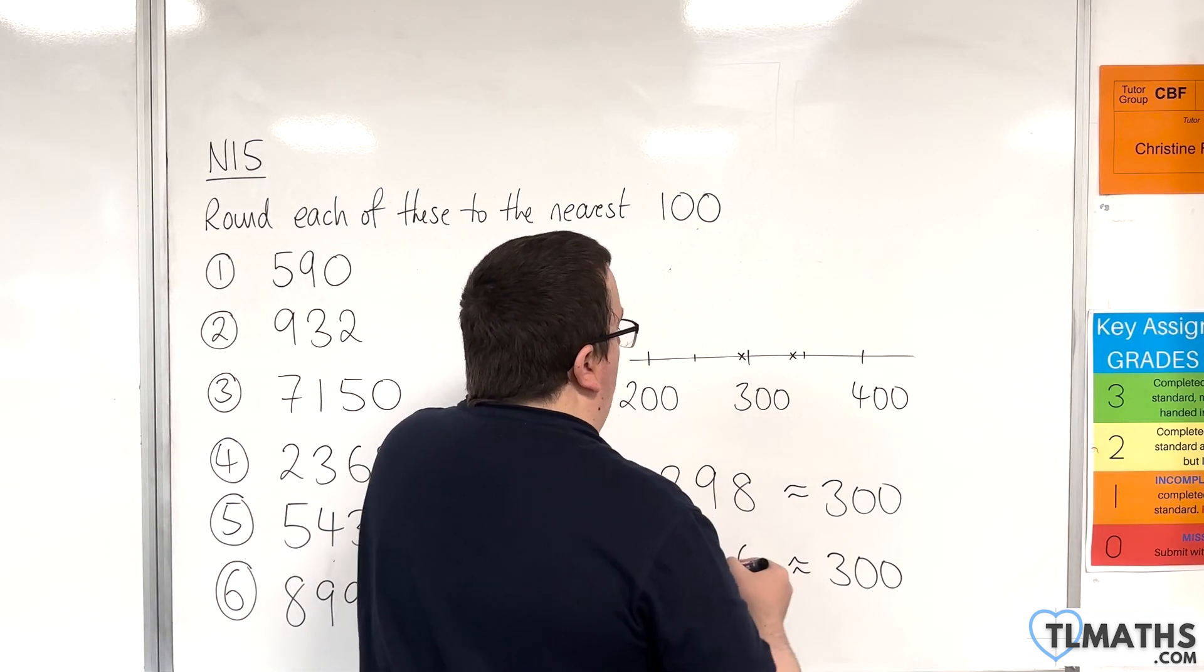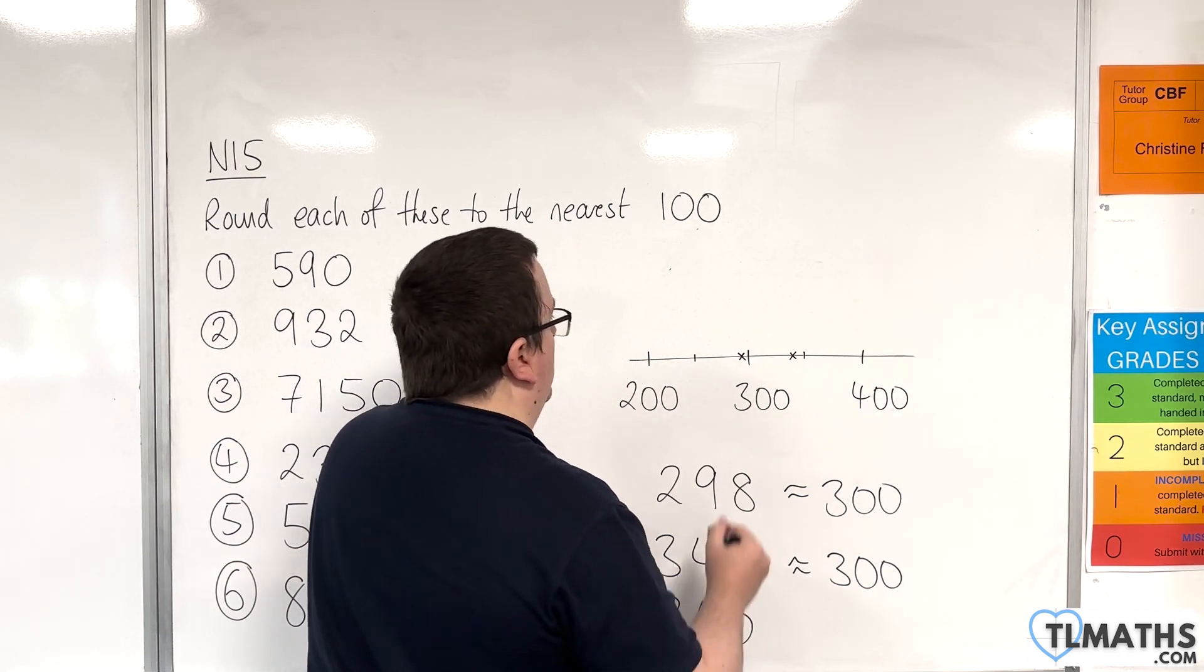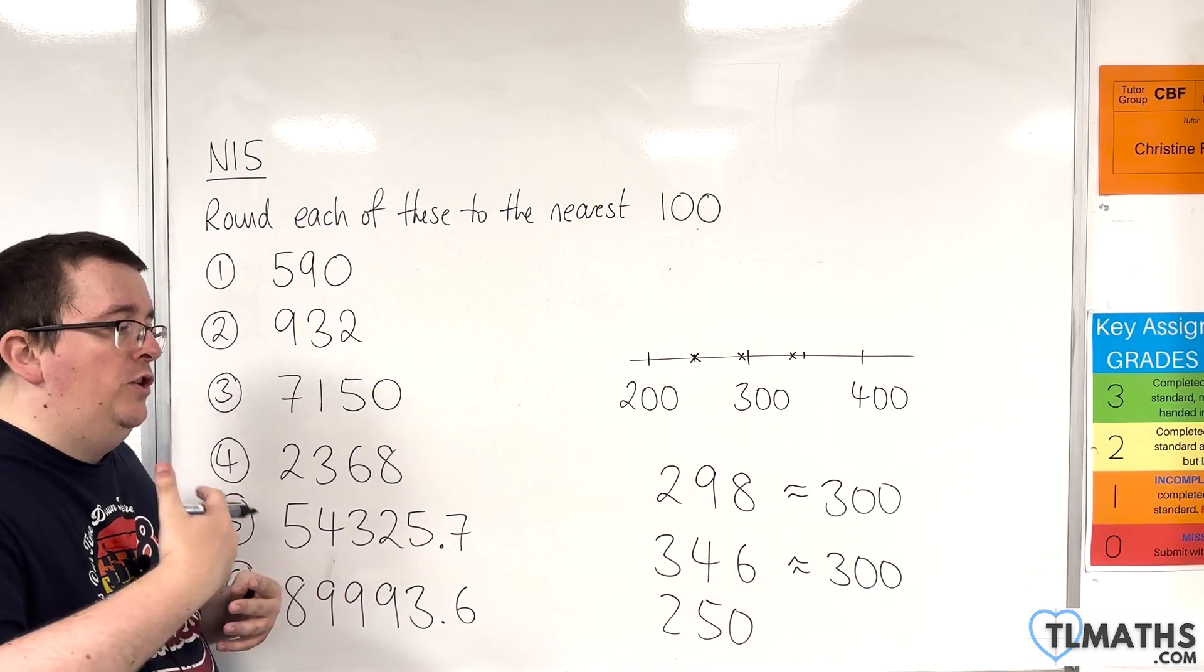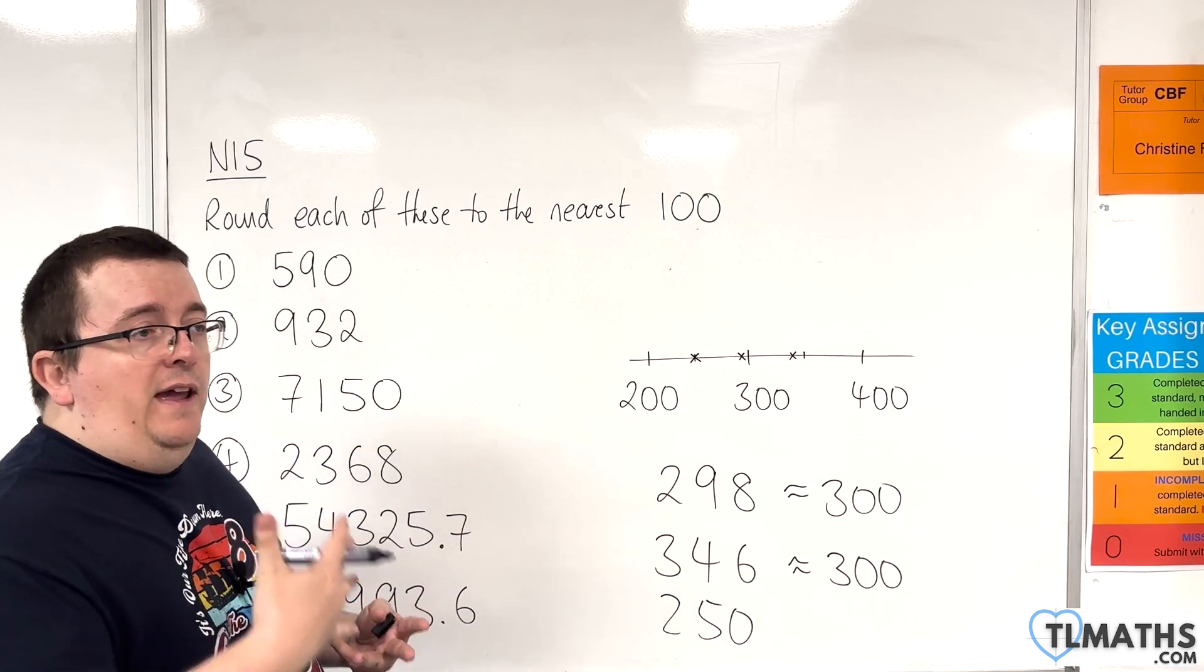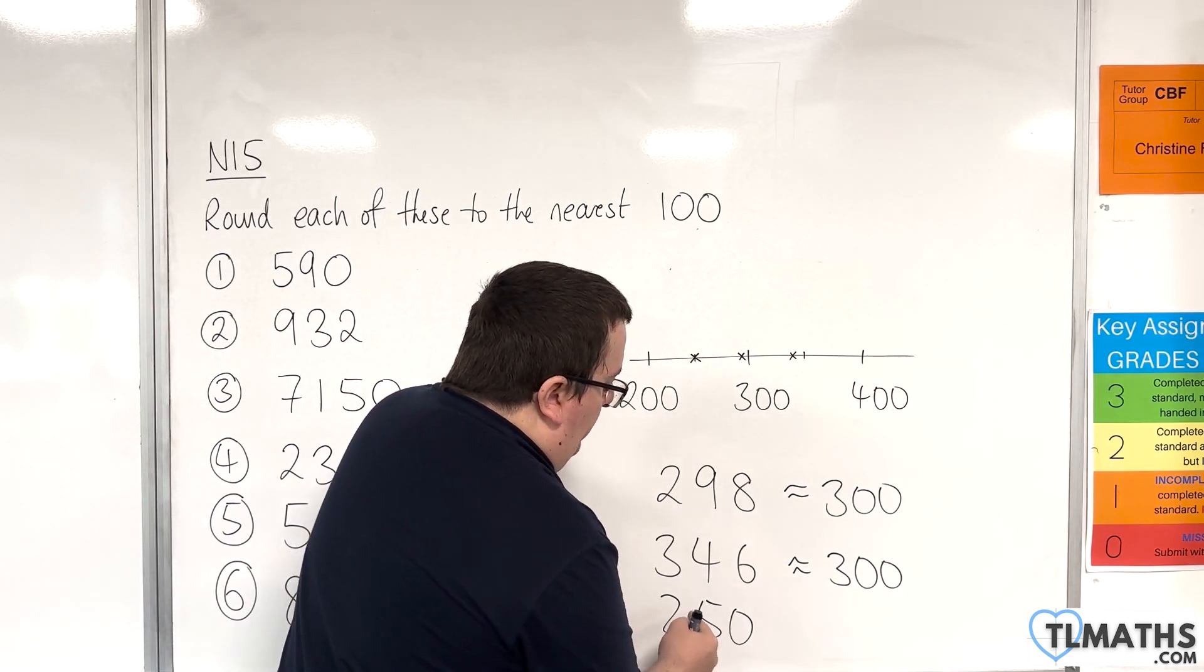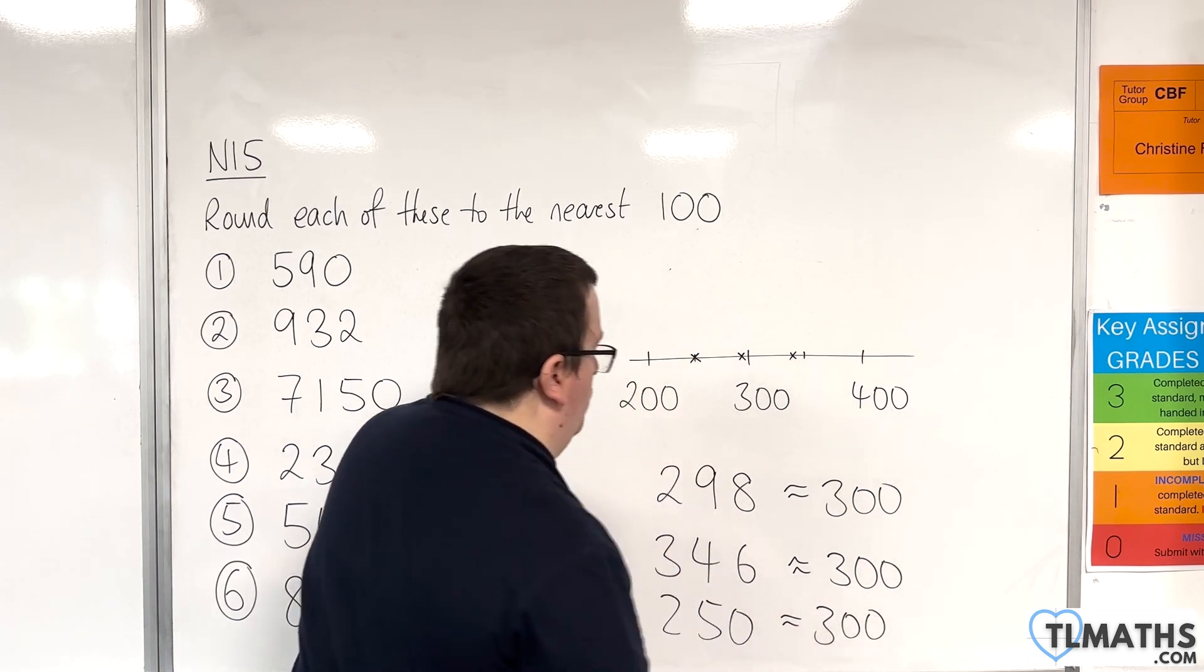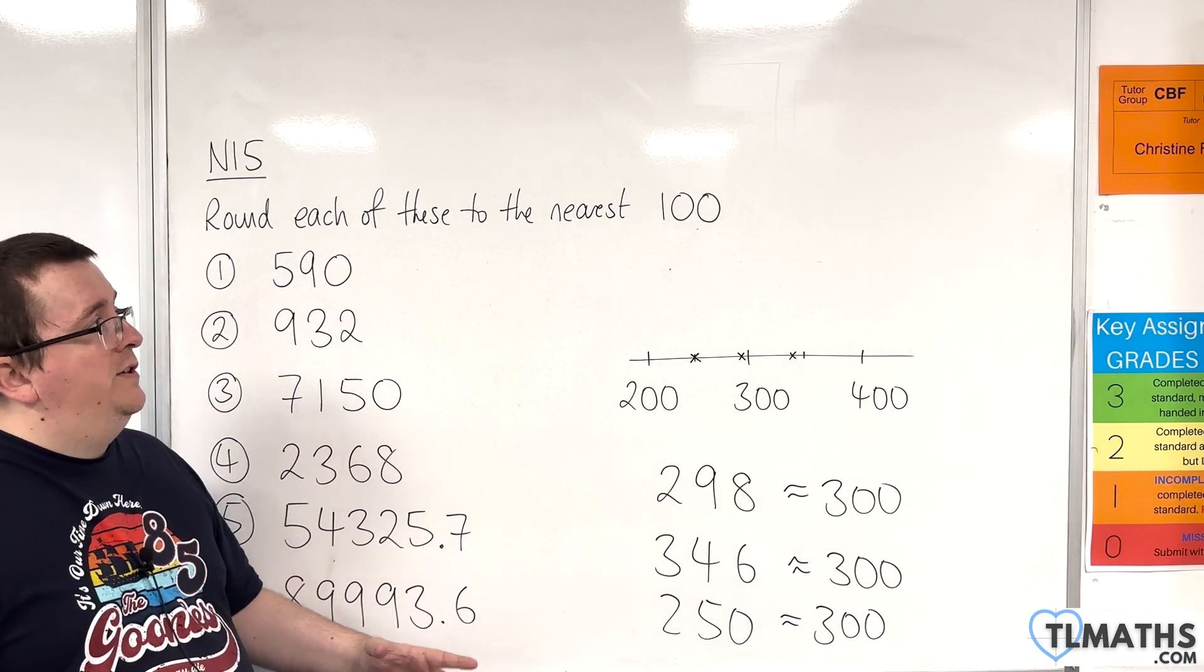If I was right in the middle, so let's say 250, here's 250, well it's halfway between 200 and 300, but by the same convention that we've been using for the nearest whole number, the nearest 10, I round it up if the number to the right of the hundreds column is 5 or more. So I look at the hundreds column, the one to the right is 5 or more, so I round it up, and this would also go to 300. So 298, 346, 250, they are all 300 to the nearest 100.